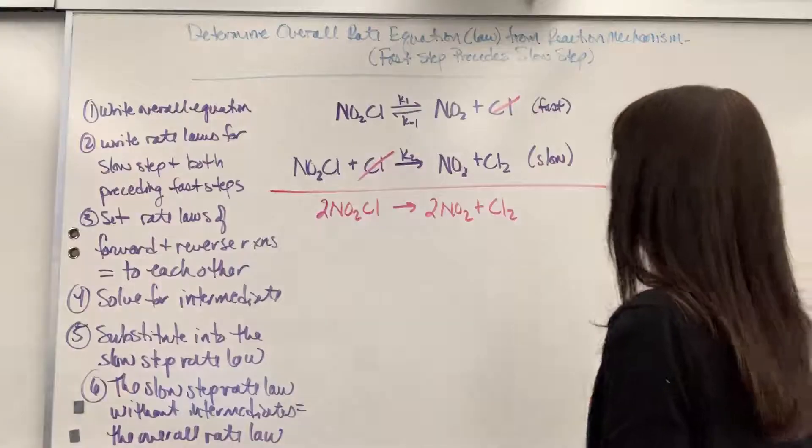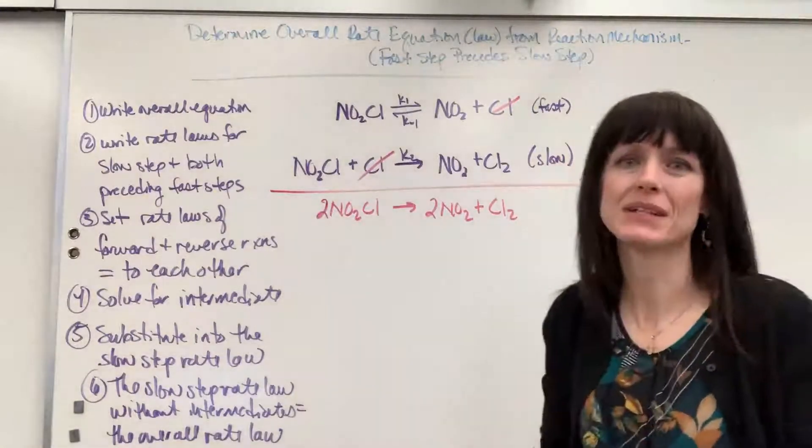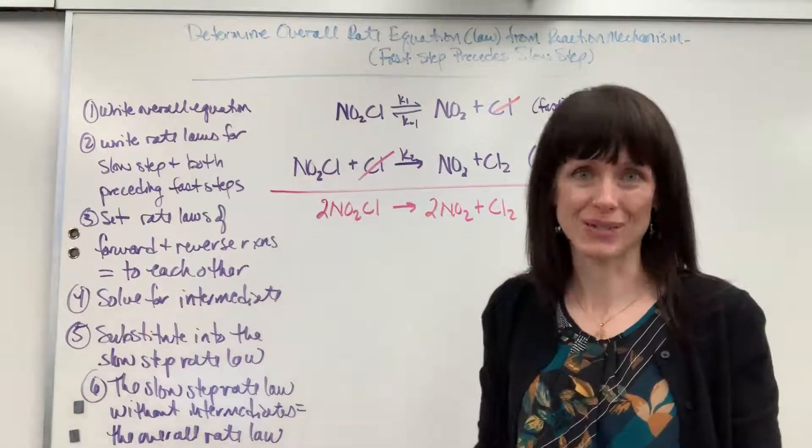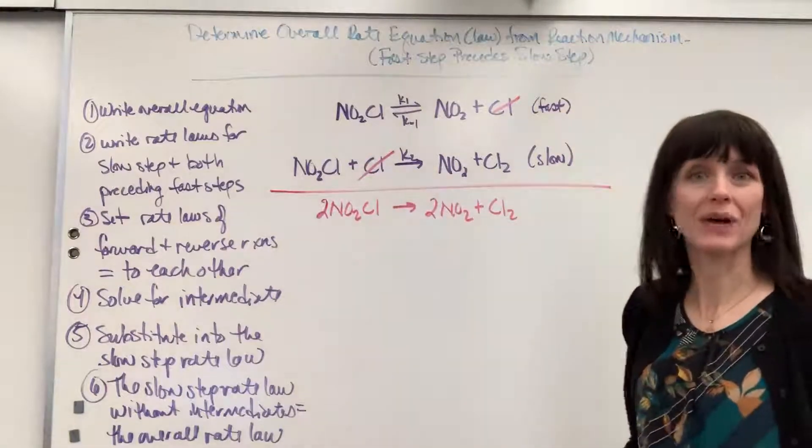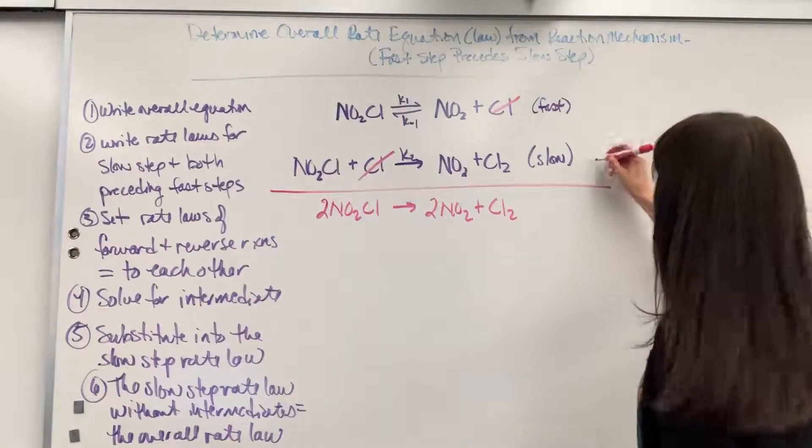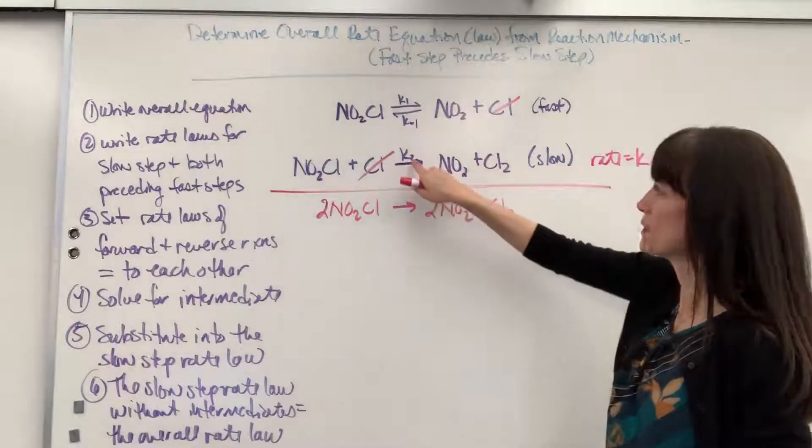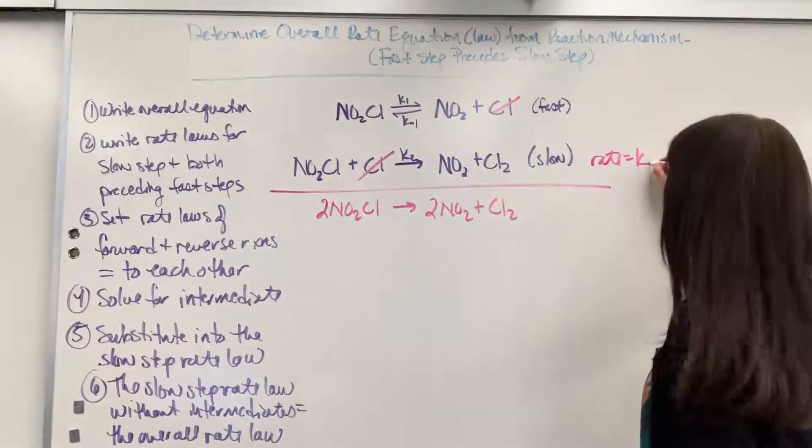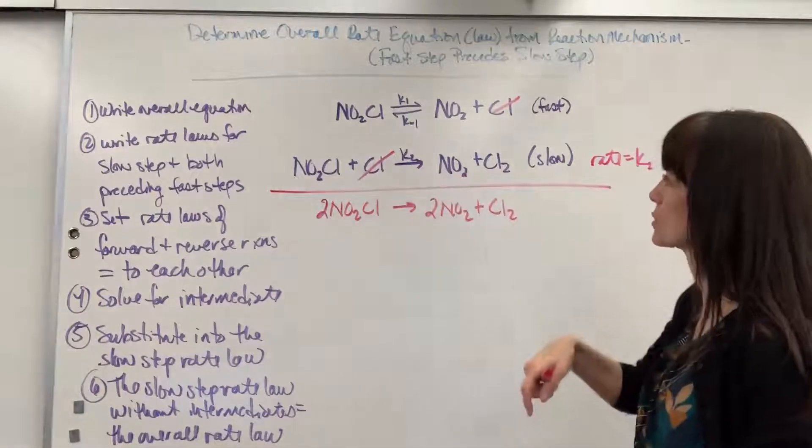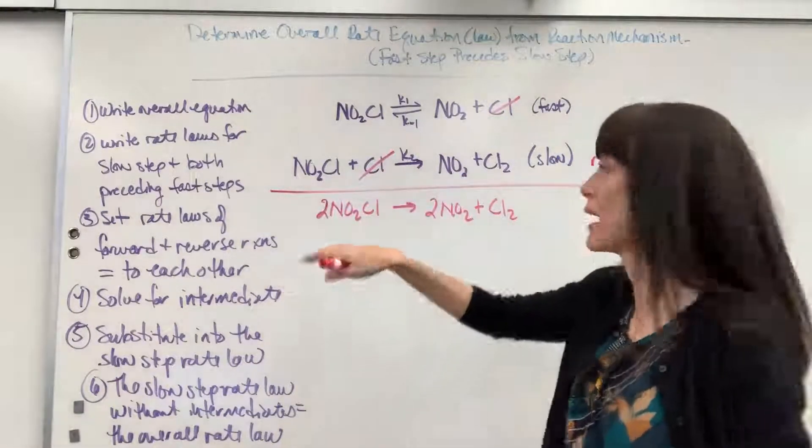The task is to use these reaction mechanisms to determine the overall rate law. To do that, remember the rate determining step is always the slow step. So I come to my slow step and I'm going to write its rate law. It will be rate equals K, and because I have so many of these, I put a step 2. This will be the rate constant for this reaction, and it's just going to be the reactants.